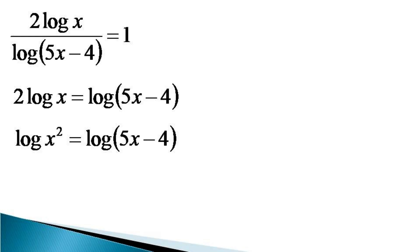Since the bases of both logs are the same, the arguments must also be the same. This makes x squared equal to 5x minus 4. Taking all the terms to the left hand side, we get the quadratic equation x squared minus 5x plus 4 equals 0.